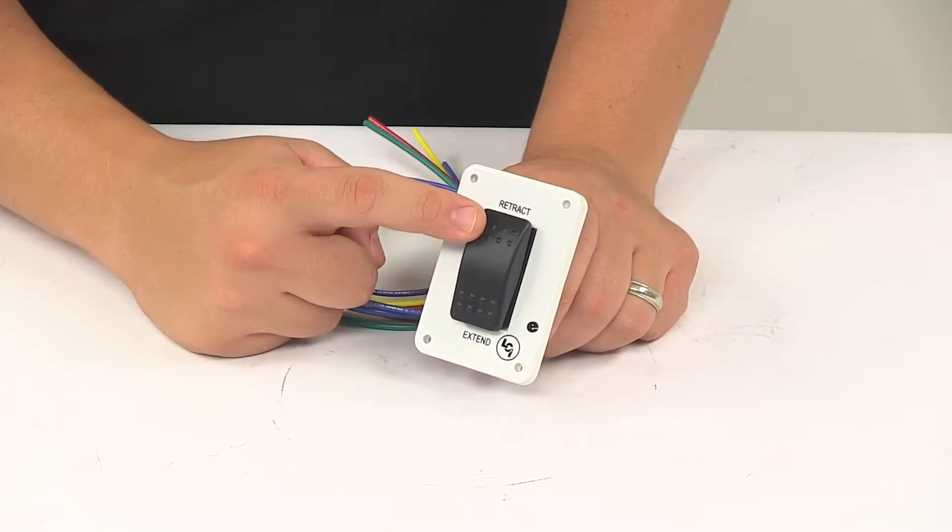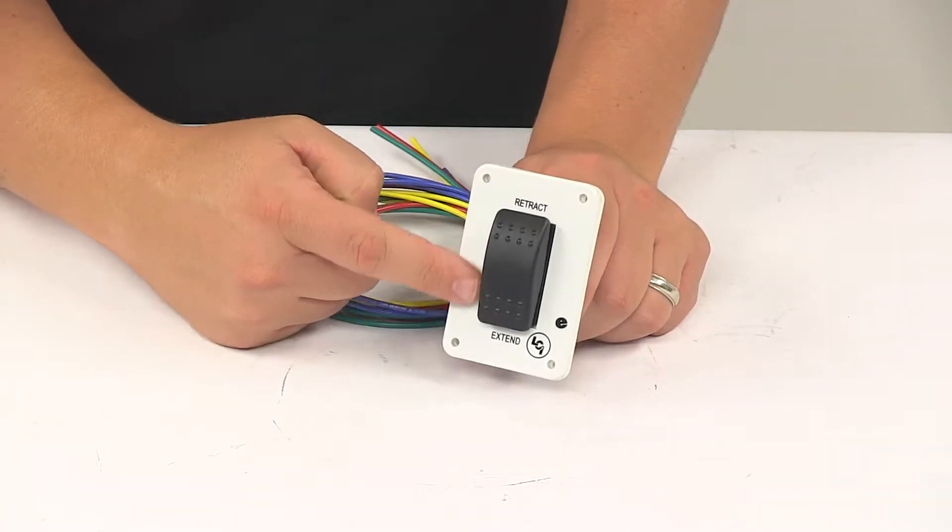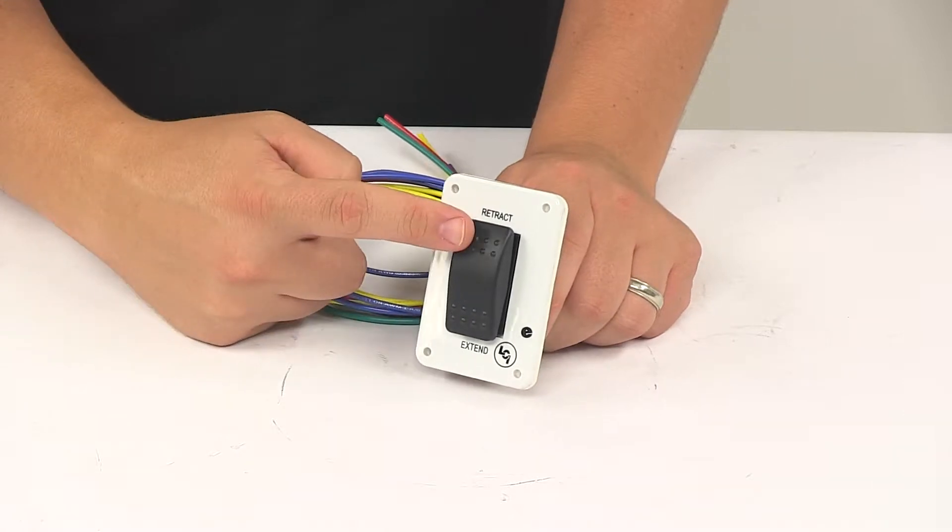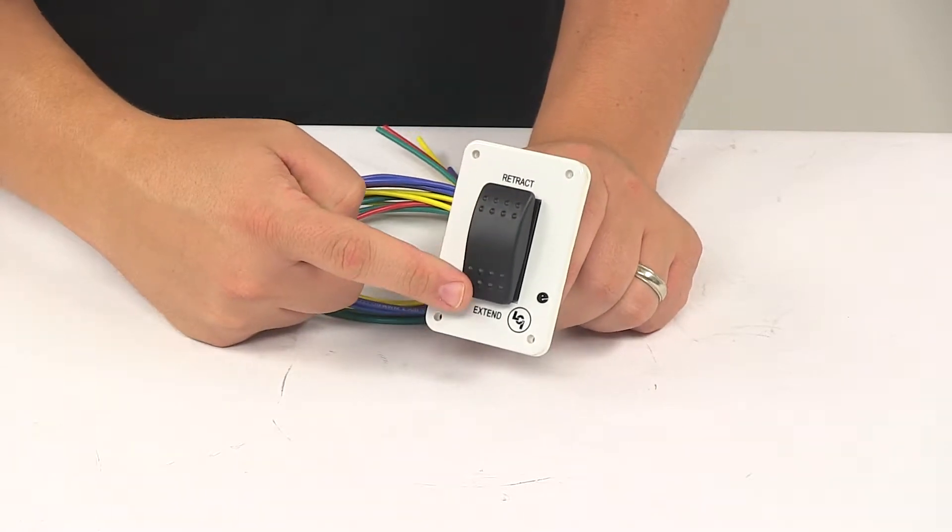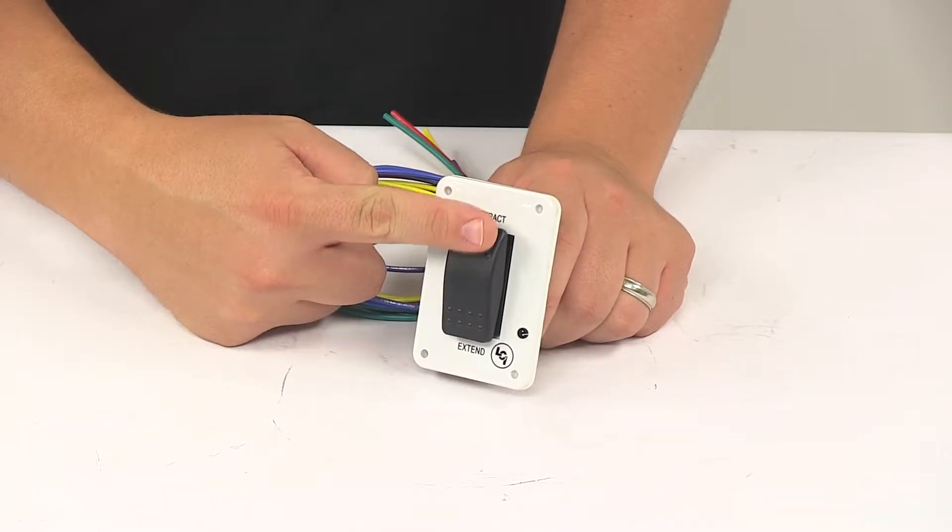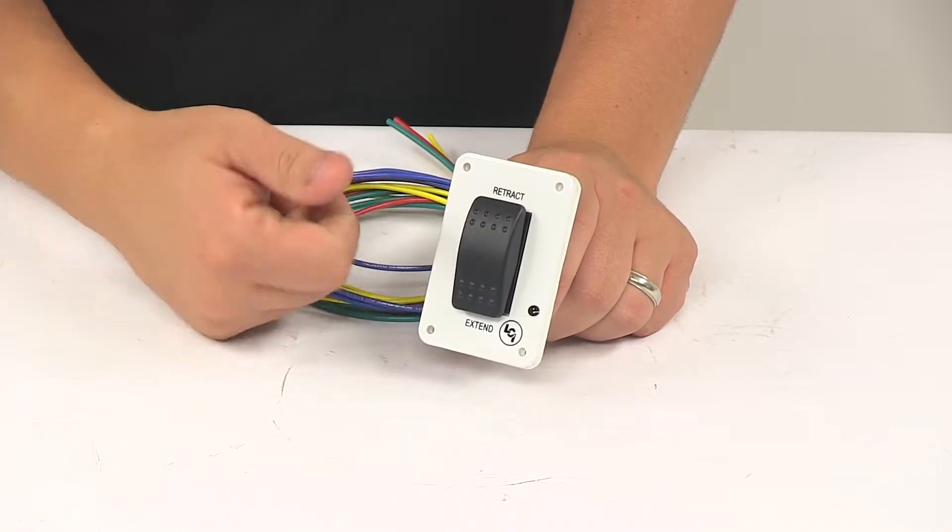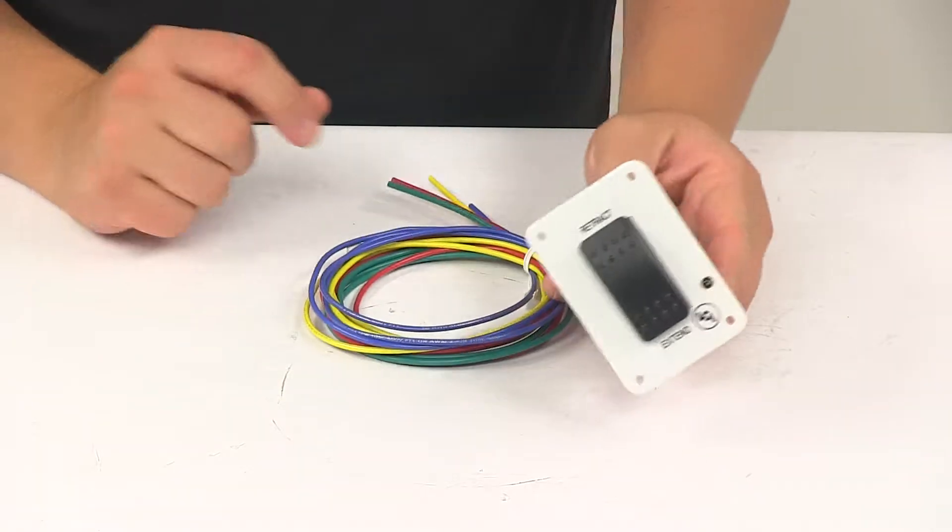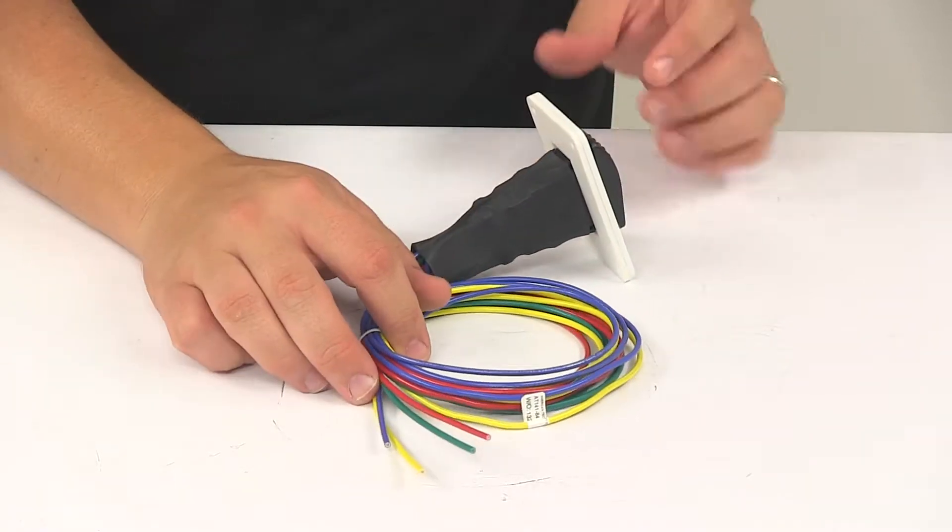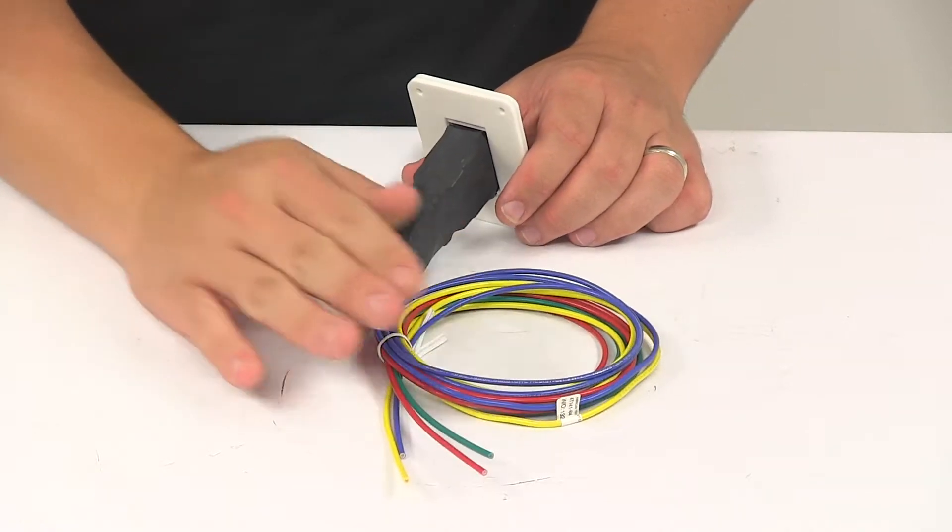Right here on the face plate, this is the switch and it has the retract and extend markings. The switch has a dimple design that allows for easy use and comfortable operation. It wires into your existing hydraulic landing gear with the included wires.